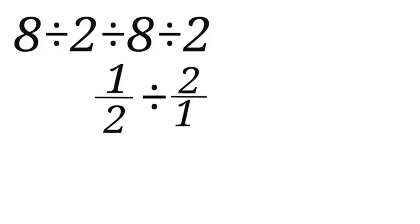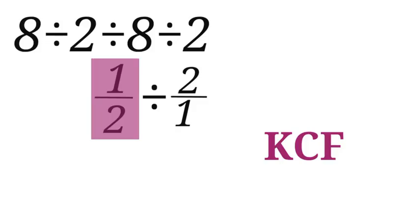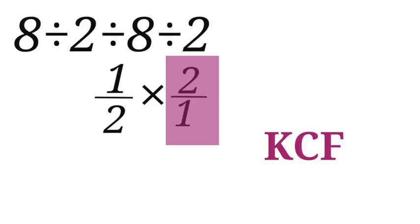Here now we are going to apply KCF. K is for Keep, C is for Change, and F is for Flip. So for K we are going to keep 1 over 2. For C we are going to change the division sign to multiplication sign. And for Flip we are going to flip 2 over 1, we take 1 to the numerator and bring 2 to the denominator.